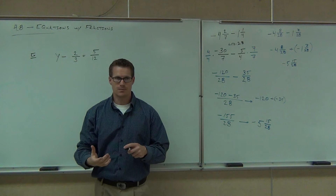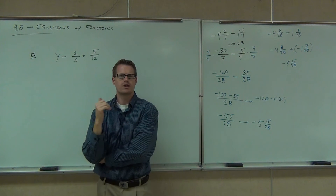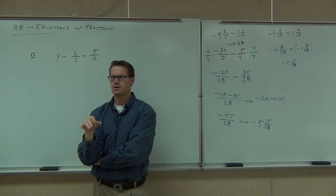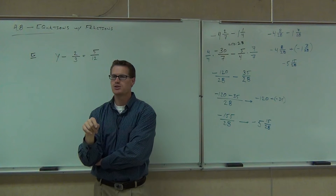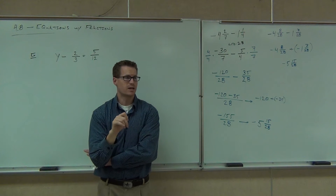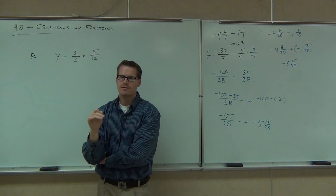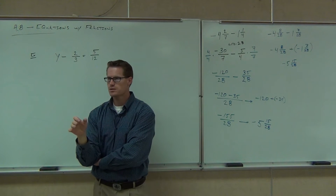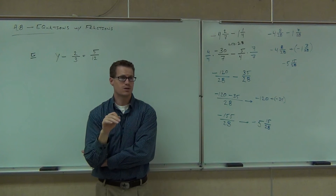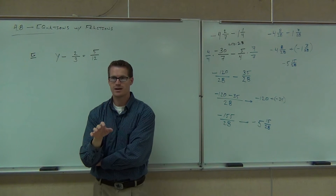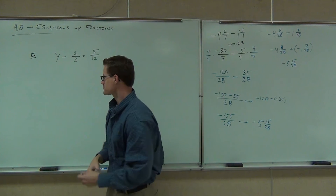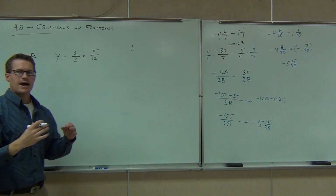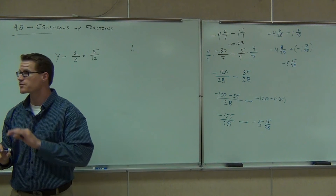If you have an equation — meaning you have an equal sign — I'm going to show you how to eliminate fractions. If you don't have an equation, you can't do this. But if you have an equation, you can get rid of fractions any time you want. Here's how: the first thing you're going to do is write everything as a fraction. If it's already a fraction, great. If not, write it as a fraction.